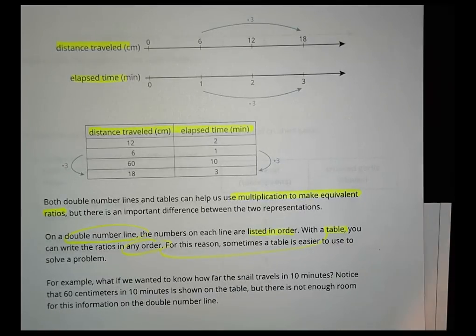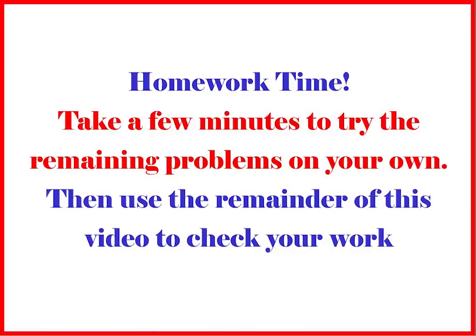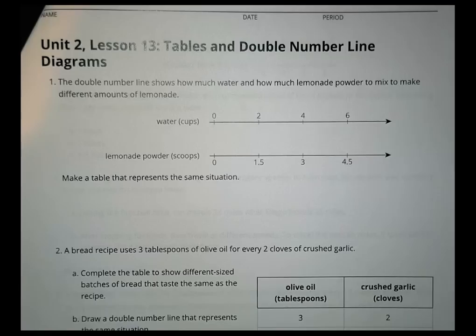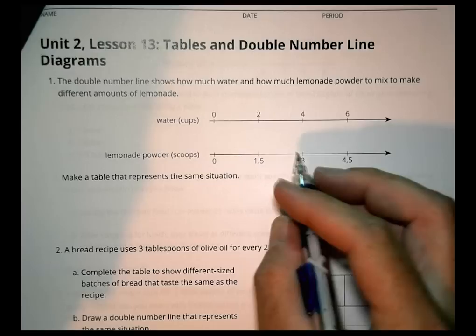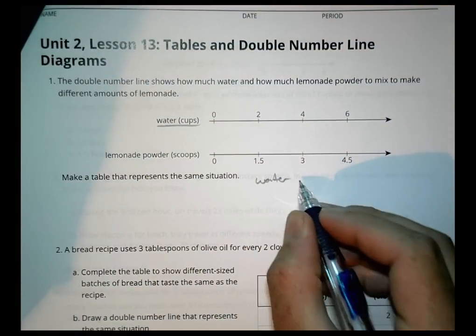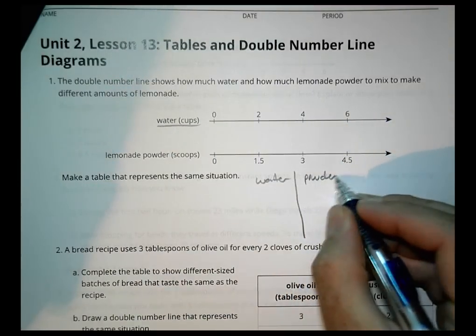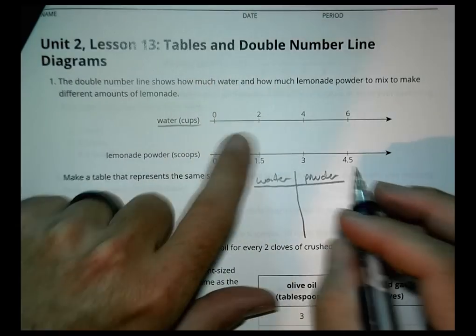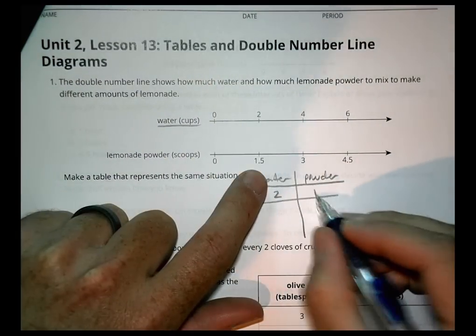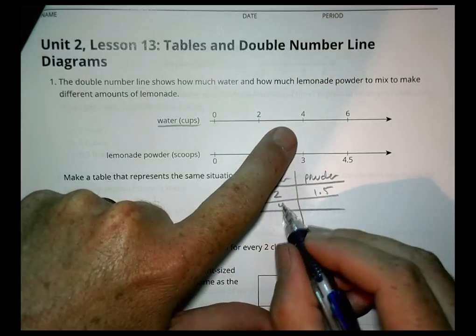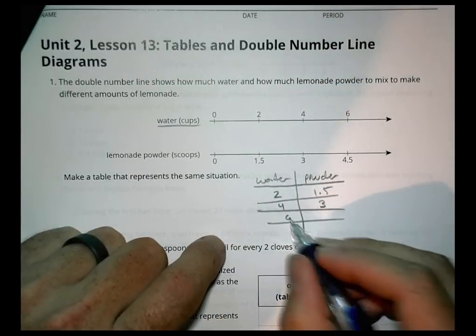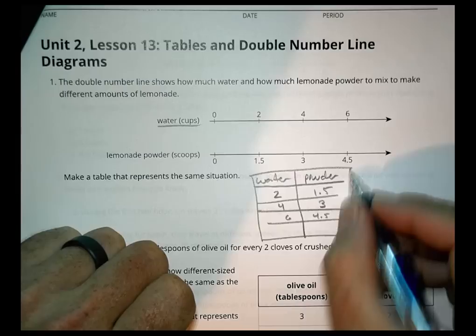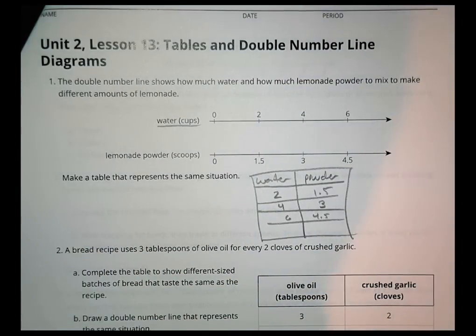Let's pause there, get your homework out, and we'll come back and check it together in just a moment. Here's our homework. It says the double number line shows how much water and how much lemonade powder to mix. Make a table to represent the situation. We'll have water on one side and powder on the other. For 2 cups of water, we have 1.5 scoops of powder. For 4 cups of water, we have 3 scoops. For 6 cups of water, we have 4.5. There's a table, that's all you had to do.